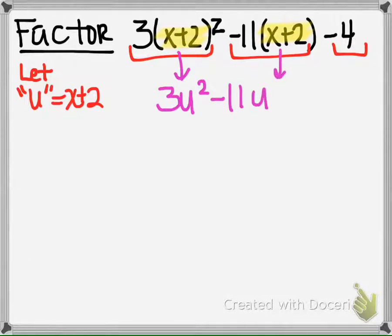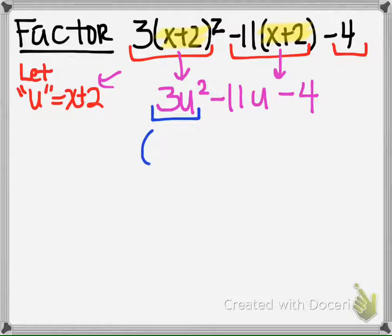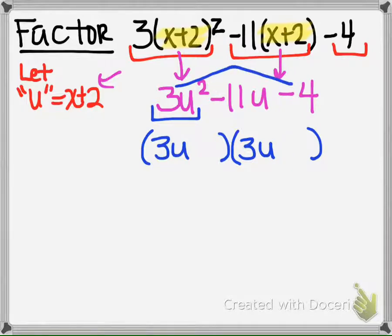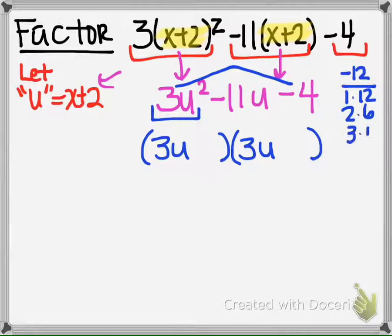So I'm going to take the x plus 2 out. So we're going to come back to this later. Now we're going to factor it just like we've learned previously in this class. So using the factoring method I showed you, we're going to put this in parentheses, and then we're going to multiply a times c. So our a and c is negative 12. And we make our list: 1 times 12, 2 times 6, 3 times 4.